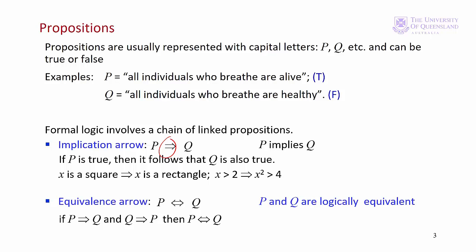The other type of arrow is the equivalence arrow. That's a double-headed arrow. In this case, P and Q are logically equivalent. If P implies Q and Q implies P, then we have P is logically equivalent to Q.